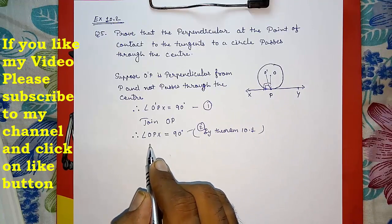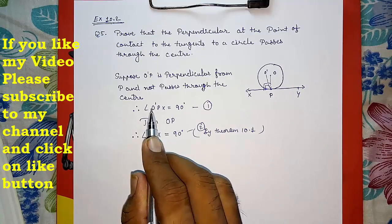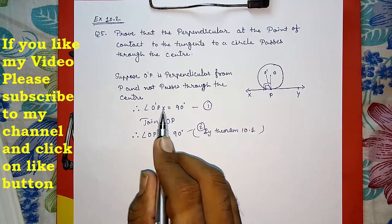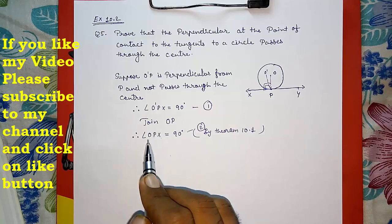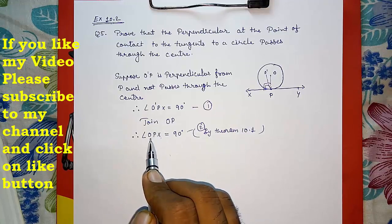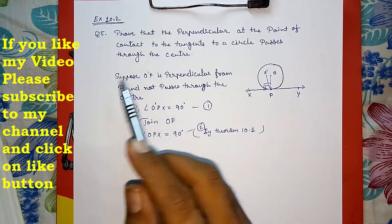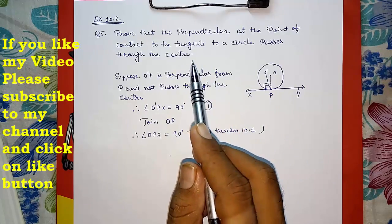So from 1 and 2, we can say that angle O dash P X equals angle O P X. Therefore, O dash and O are not different points; they are the same point. This way we can solve this problem and just write down the statement and solve this.